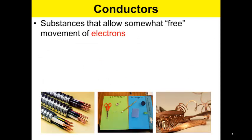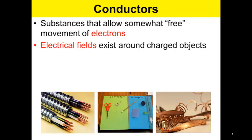Circuits also contain conductors, which are substances that allow a free movement of electrons. Electrical fields exist around charged objects.